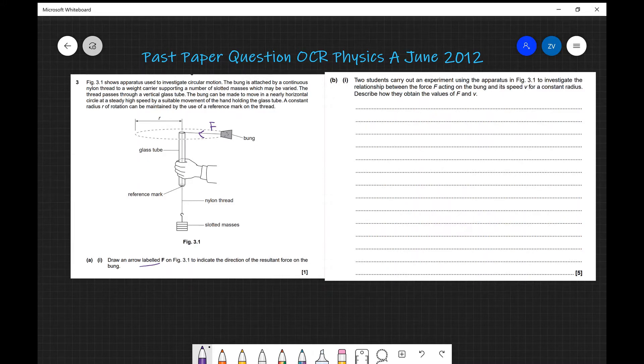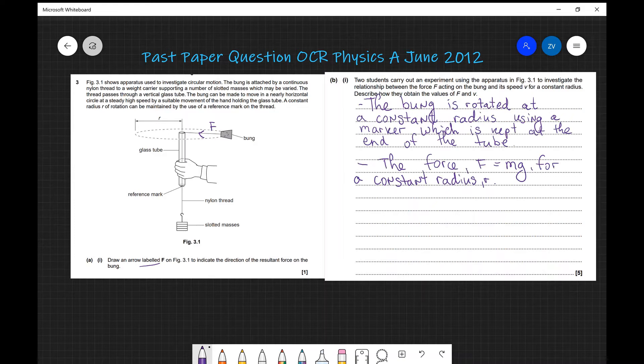Now the first thing to realize is that whenever the radius is constant, in other words this length across here does not vary, it's not getting shorter, it's not getting longer, well that means that the force and mg which is acting downwards have got to be perfectly balanced. The bung is rotated at a constant radius using a marker which is normally kept at the end of the tube. We could just use something like a whiteboard pen and leave a little mark and try to keep that at the end of the tube. This would ensure that we are keeping a constant radius during this experiment.